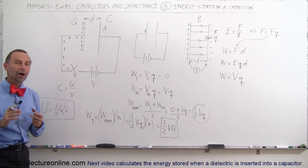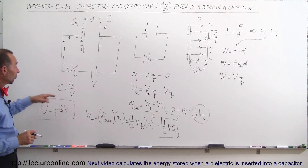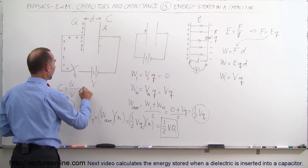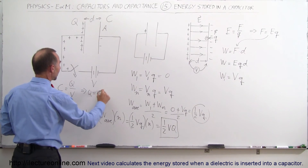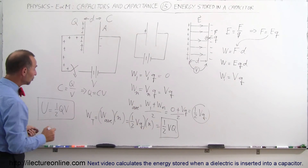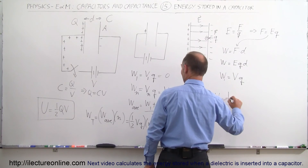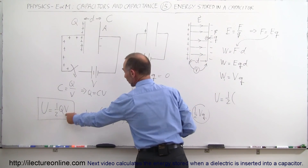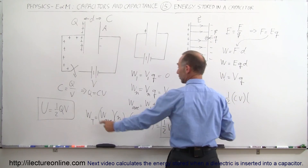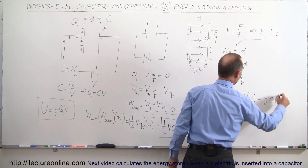That is the total energy of a charged capacitor. There are different ways of writing it. Since C equals Q divided by V, we can also say the charge Q equals C times V. If we replace Q by C times V, then the potential energy equals one-half times C times V times V, which is equal to one-half C V squared. That's another way of writing the energy stored on a capacitor.